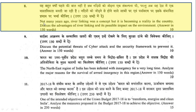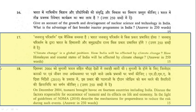In 2017 GS3, environmental questions included: 'River interlinking was once a concept but became a reality. Discuss the advantages of river linking and its possible impact on the environment.' 'Climate change is a global problem. How will India be affected by climate change? How will Himalayan and coastal states of India be affected?' And: 'On December 2004, the Tsunami brought havoc on 14 countries including India. Discuss factors responsible for the occurrence of tsunami and its effects on life and economy. In the light of NDMA guidelines, describe the mechanism for preparedness to reduce risk during such events.'